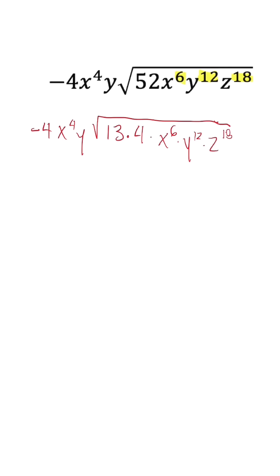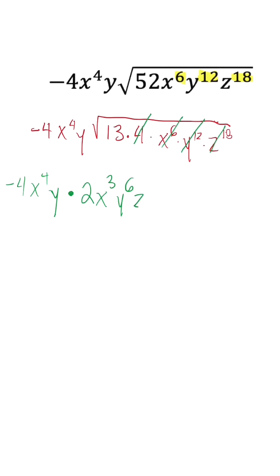So when we go through now, what's on the outside is still going to remain the same. But we're going to multiply what's on the outside times what we pull out from under the radical. So the square root of 4 is 2. The square root of x to the 6th power is x to the 3rd. The square root of y squared is y to the 6th. And the square root of z to the 18th is z to the 9th. Now, what's under the radical is only 13, and we don't need to worry about that for now.